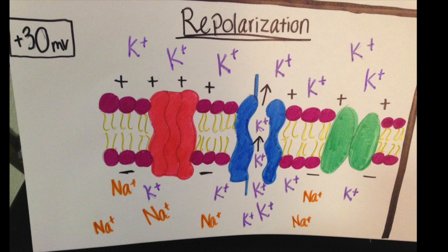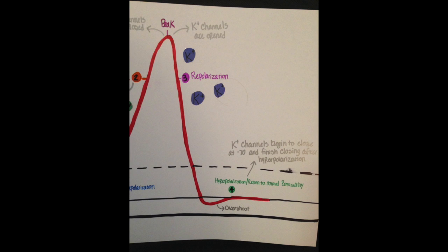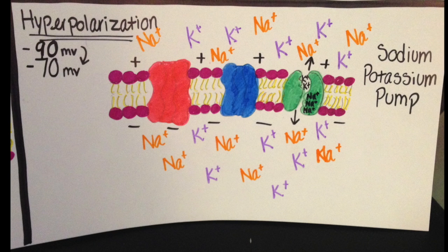In the hyperpolarization stage, the potassium ion gates don't close fast enough, which causes leaking of potassium ions, or an overshoot, at negative 90 millivolts. In order to correct this, the sodium-potassium pump uses ATP to pump two potassium ions back to the inside and three sodium ions back to the outside. This restores the cell back to normal permeability.